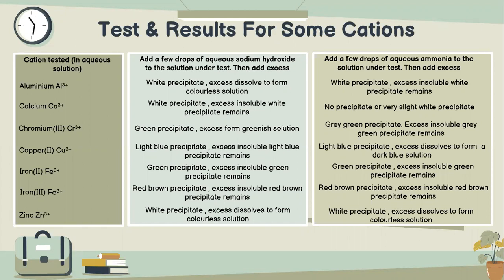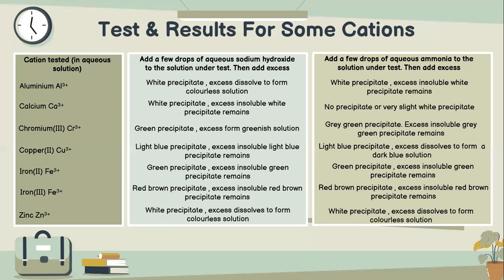For iron Fe3+ ions: when we add a few drops of aqueous sodium hydroxide to the solution under test, then add excess — red-brown precipitate forms, excess insoluble red-brown precipitate will remain. When we add a few drops of aqueous ammonia to the solution under test, then add excess — red-brown precipitate forms, excess insoluble red-brown precipitate will remain.